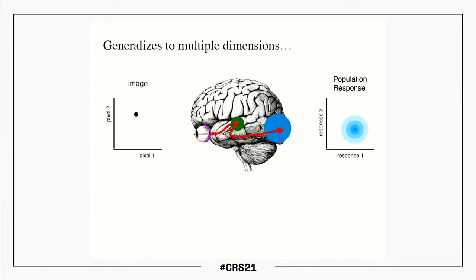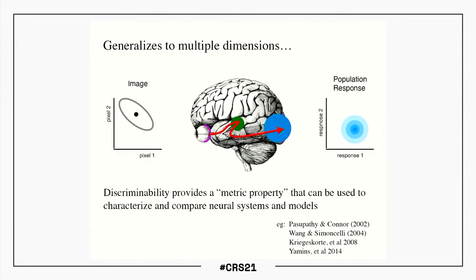This generalizes to multiple dimensions. If you have a stimulus in a high-dimensional space that gets mapped to some internal population code - which is also noisy - that constrains our ability to discriminate stimuli. Discrimination in a high-dimensional space is not a number or a threshold; it's a surface, often depicted as ellipsoidal. There's an ellipsoidal surface around any stimulus describing how far you have to go in stimulus space to tell the difference between the base stimulus and a perturbed one. I'll be using Fisher information under the hood to characterize and compare neural systems and models.